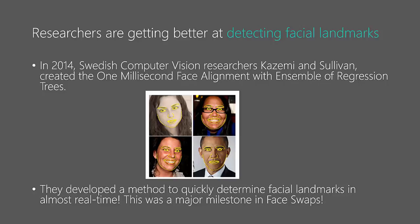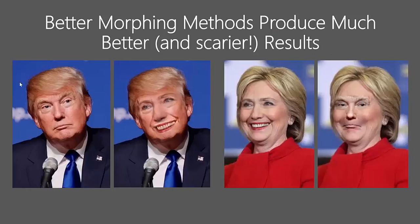This method was actually built into the dlib library, which is what we'll be using. Here are some quick results: Hillary Clinton's face overlaid onto Trump looks pretty good and pretty scary. Donald Trump's face overlaid onto Hillary actually looks very realistic, but also very scary. We'll be having some fun doing more face swaps soon.